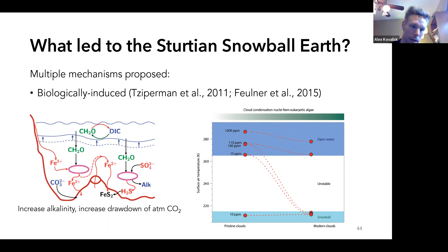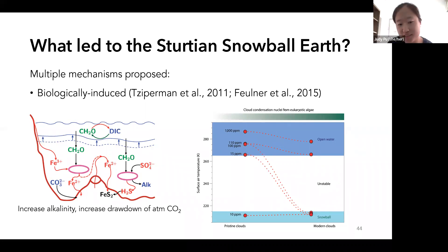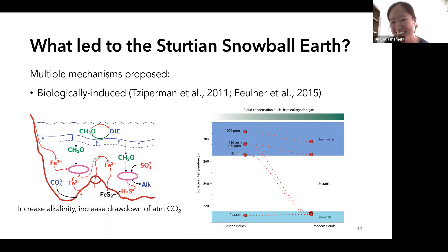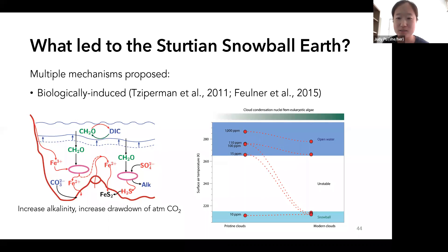Lyle Nelson asks: is the rhyolite dome genetically related to the Franklin LIP in any way? No — these are just rhyolites in the Yukon. All the details of those studies are in McDonald et al. 2017, 'Cryogenian of the Yukon.' Francis MacDonald adds that those rhyolites are probably rift-related.